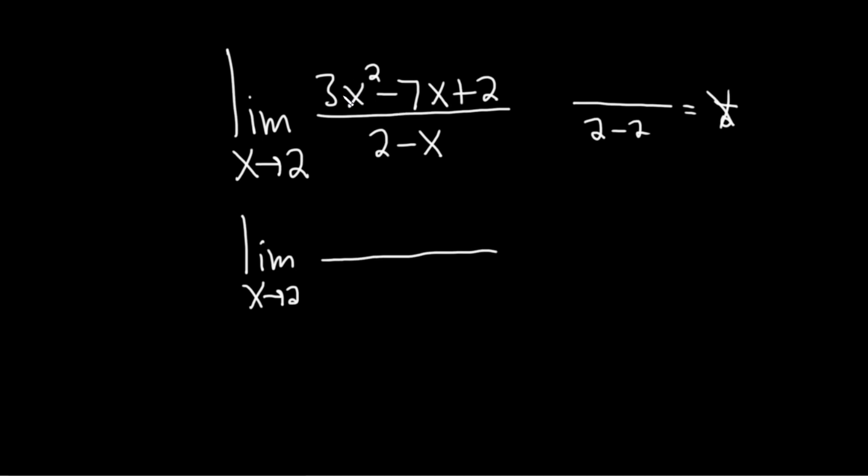Because there's a 3x squared here, when we attempt to factor this quadratic, it's probably going to look like this. Maybe 3x and then x, because 3x times x is 3x squared. But that means that on the bottom, we probably have to have an x also, not a 2.